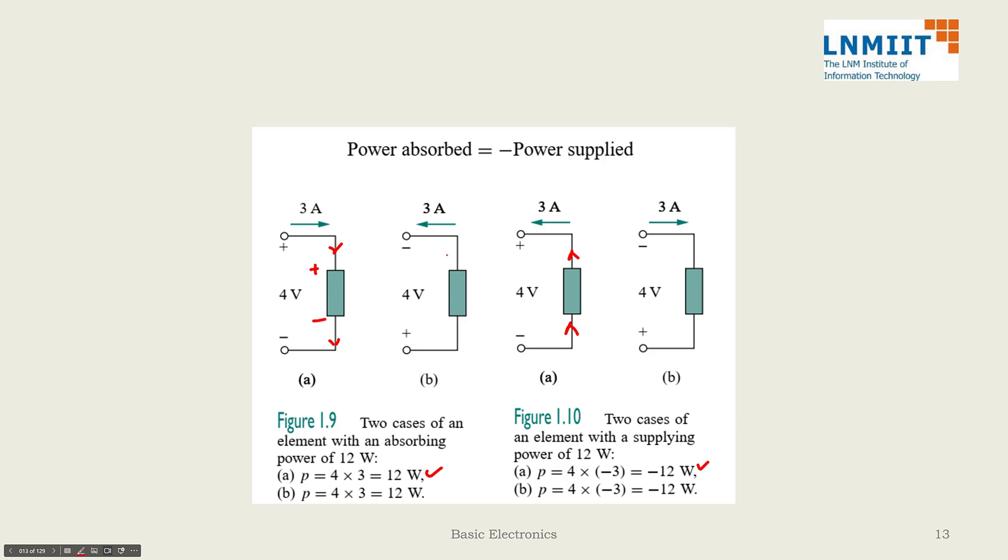Let us come back here: the current is leaving from negative and entering from positive, so this will be positive power. And here we are entering from negative, leaving from positive, so this will be negative power. This is one thing that we have to remember. There are other sign conventions also, but just for uniformity, let us remember that we will always have current entering from positive and then the product will be positive.